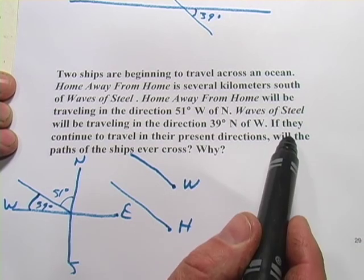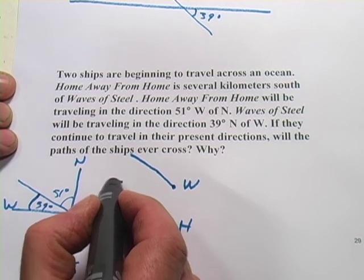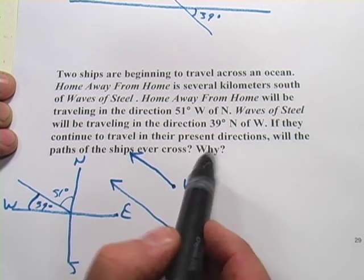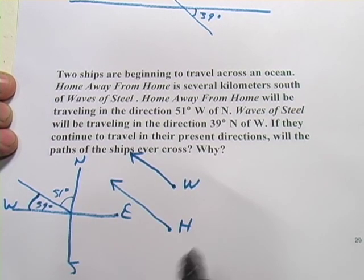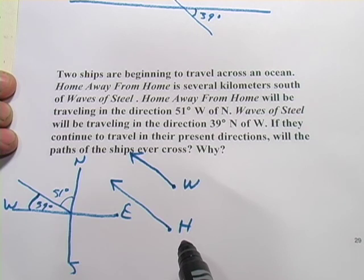Now the question here is, if they continue to travel in their present directions, will the paths of the ships ever cross? The answer is no. And to explain why, it's because they're traveling on parallel courses here. They're traveling in exactly the same direction, so the paths will never cross. So that's a little bit of word problems with parallel lines.